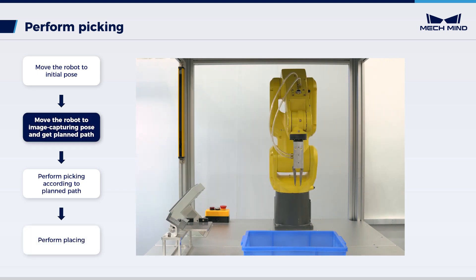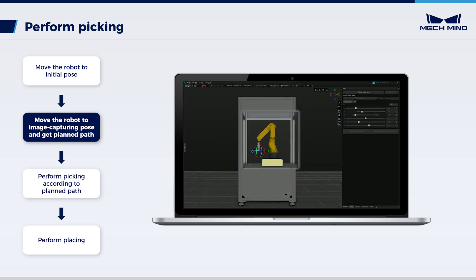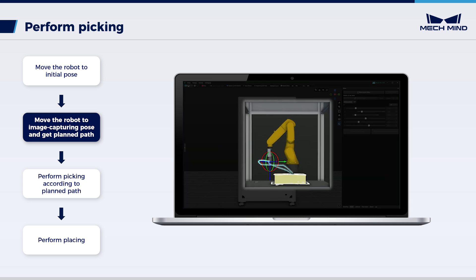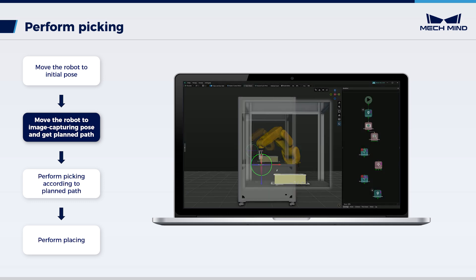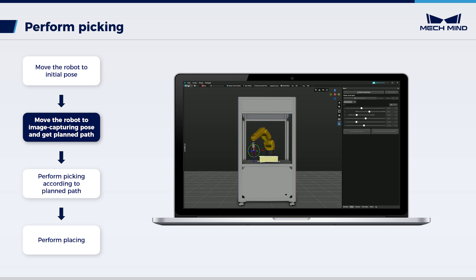In the second step, the robot needs to get the planned path from MechViz by standard interface communication. The MechViz project can provide the robot with path planning, collision detection, and simulation. Let's begin with building a pick-and-place project in MechViz to preview the picking path of the robot.